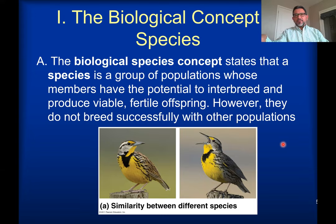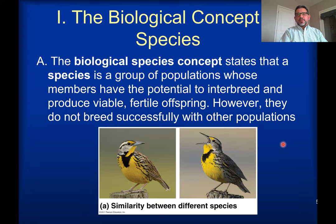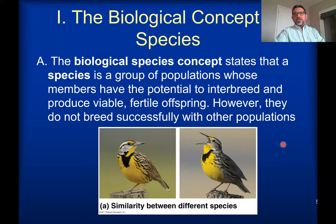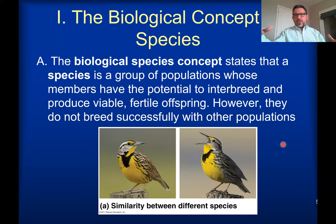Under the biological species concept, we have many different populations with interbreeding and gene flow between them. This helps share genes present in one place so they can be transferred to another population in a slightly different location. From this point of view, two species are going to be different if there is no gene flow between them. If there is no interbreeding between two groups of organisms — even though they may look similar — if there is no gene flow, there are going to be two different species.